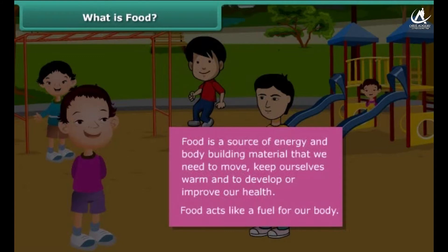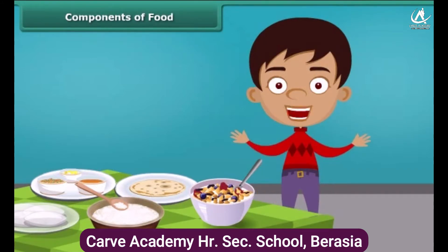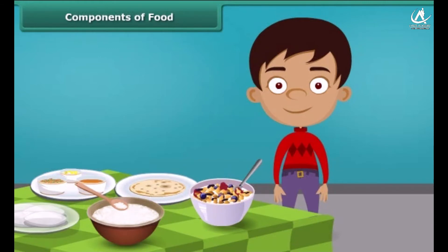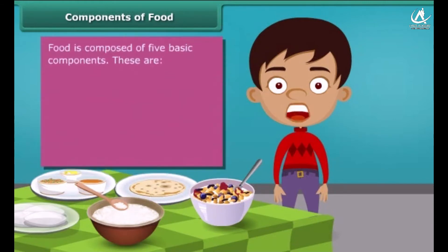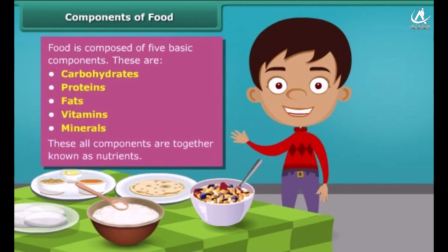Thus, food acts like a fuel to our body and we cannot survive for long without it. Now, a question may arise that how do we get energy by eating food and why food is known as fuel for our body? Friends, food has five basic components in it. These are carbohydrates, proteins, fats, vitamins and minerals. All these components together are called as nutrients.